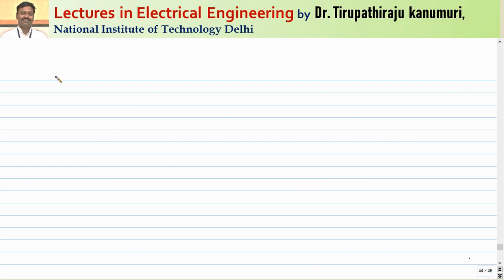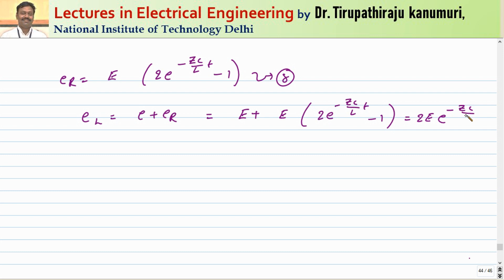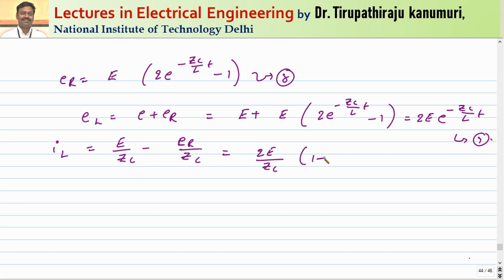From this, solving for er: er equals E into [2·e^(minus Zc/L · t) minus 1] (equation 8). The transmitted voltage at the load equals incident plus reflected: el = E + E·[2e^(−Zc t/L) − 1] = 2E·e^(−Zc t/L) (equation 9). The load current il equals (incident voltage minus reflected voltage)/Zc = (2E/Zc)·[1 − e^(−Zc t/L)] (equation 10).